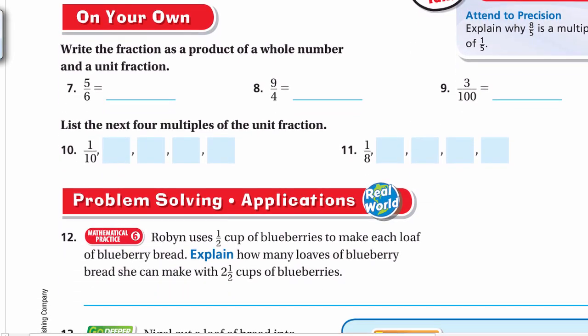Now it's your turn. Try to solve on your own questions 7, 8, and 9 — write the fraction as a product of a whole number and a unit fraction, where the numerator tells us the whole number and the denominator tells us the unit fraction. For questions 10 and 11, find the next four multiples of the unit fraction: starting with 1/10 and 1/8. Hope you enjoyed this lesson. If you're in my class, solve on your own and we'll review it together on the live session. Have a nice day, bye bye.